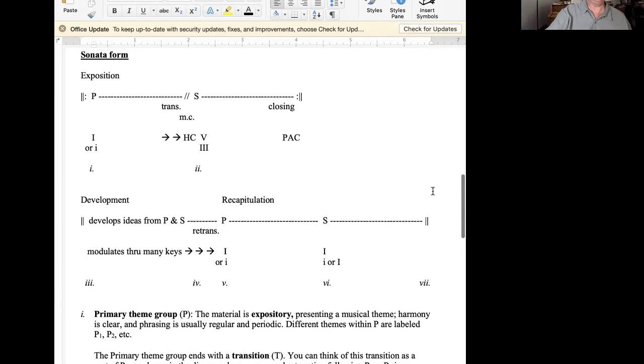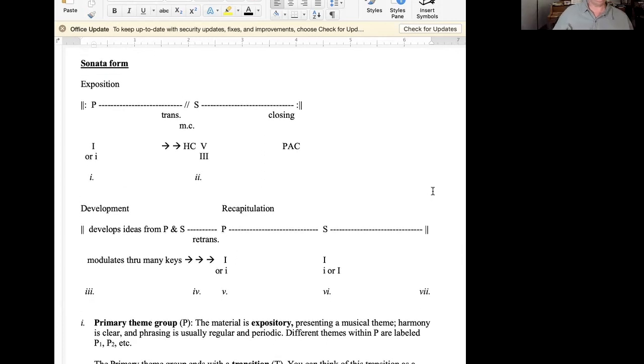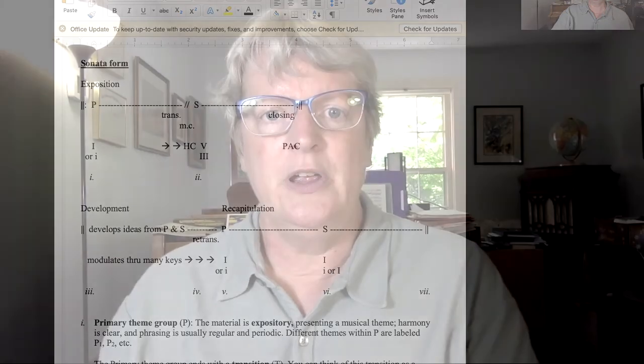So that's an overview of sonata form. In the next three lectures, we'll use the Mozart Sonata Köchel number 309, First Movement, which is discussed in your textbook, to have a more in-depth look at an example of a sonata exposition, a development, and a recapitulation. So the next three lectures will go over some of this material, but with a particular example and adding in some additional information.